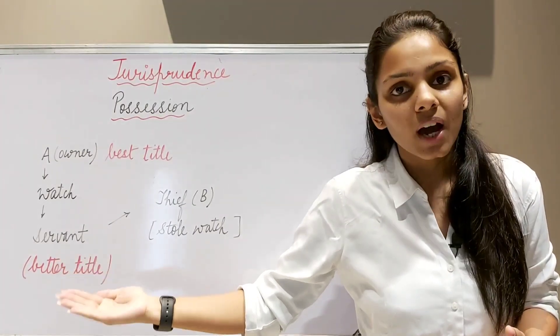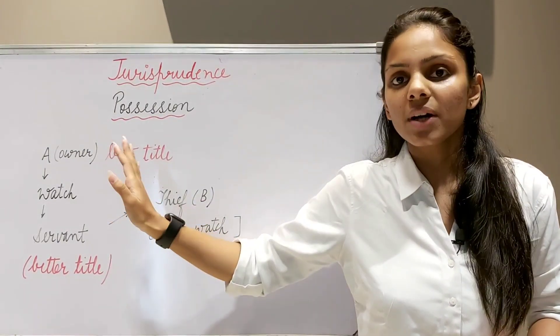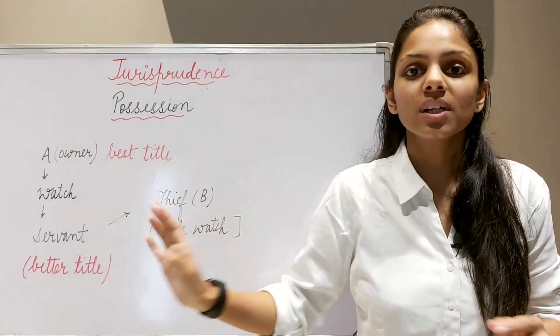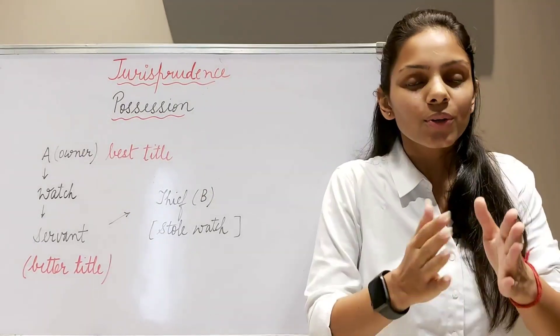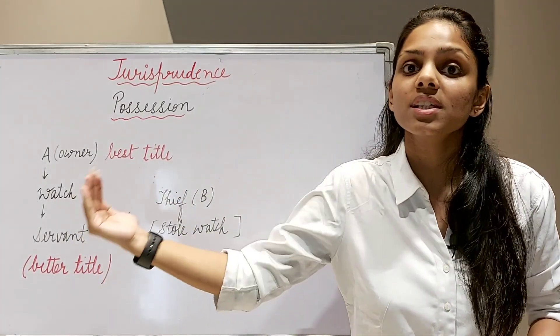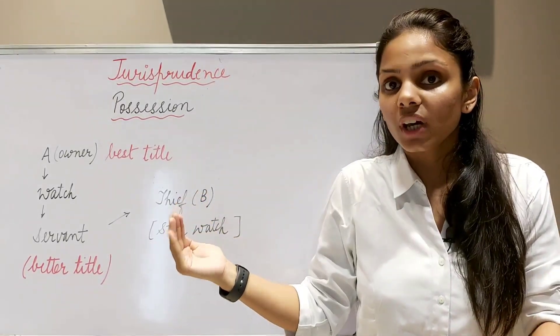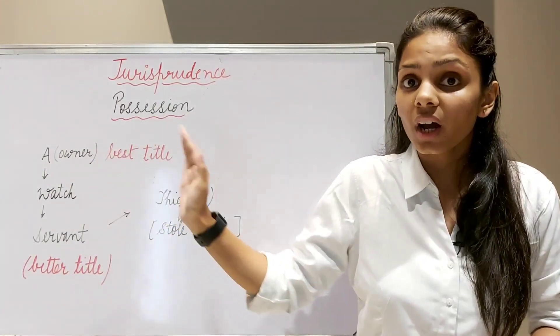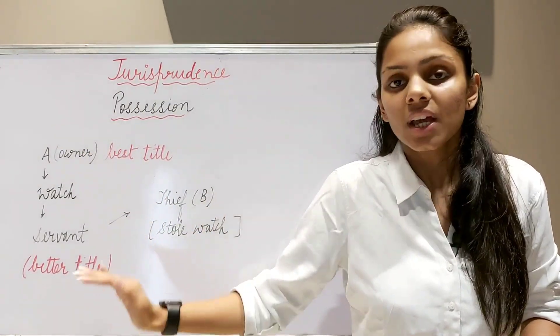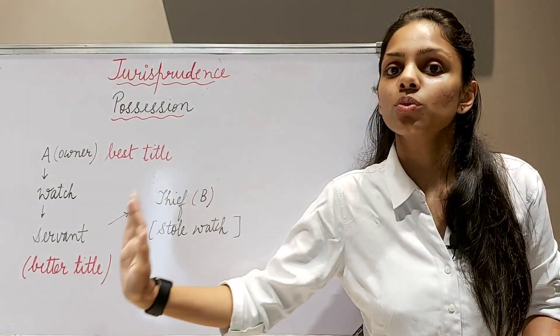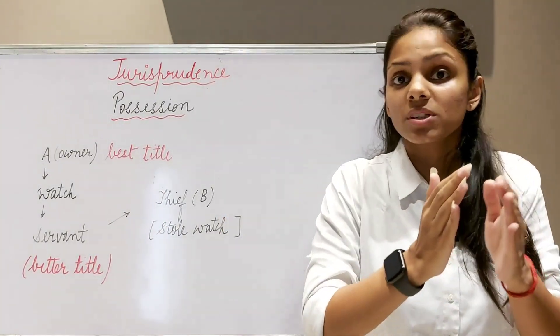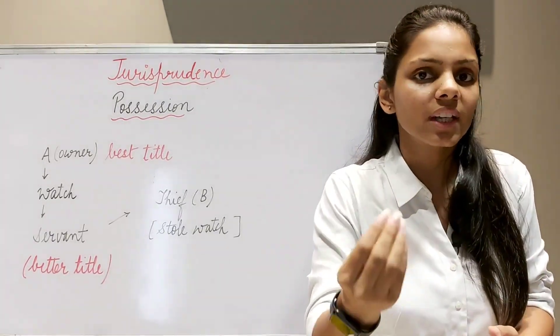Guys, now here we study one concept, best and better title. A has the best title to this, being an owner, we have understood it. But guys, as far as these two people are concerned, here the thief cannot tell the servant that I will not give you the watch because you are not the owner. Because we are not talking about ownership, we are concerned with possession. Here the thief has to give possession to the servant because servant has a better title as against this person. Now what happens here is that this person has a better title against thief, but not against his owner. Obviously, owner has the best title. If we talk about these two, who will get possession, since he has a better title to it obviously than this thief, the thief has to return that watch to him. He is not the owner, but he has to give possession because possession is a relative concept. We study relative concept in possession. Therefore we look for better title, whoever has better title, the watch will be given to him.